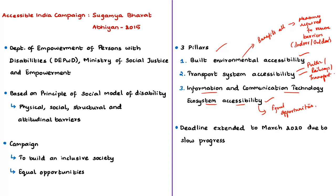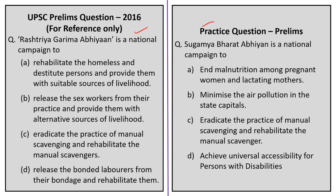As per the news article, the Ministry of Social Justice and Empowerment informed the Lok Sabha that the deadline for the campaign has been extended to 31st March 2020 due to slow progress in implementation. This is disappointing because one of the most promising and comprehensive campaigns to address the needs of persons with disabilities is not being given enough importance. We can only hope that the targets will be achieved by the revised deadline of March 2020. A practice question will be discussed at the end of the session.